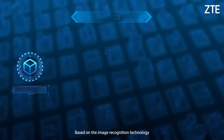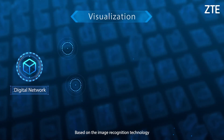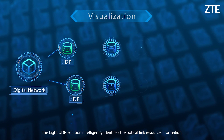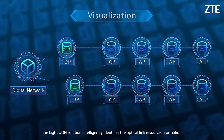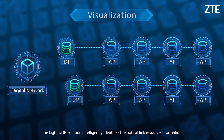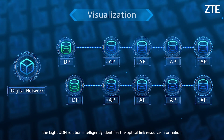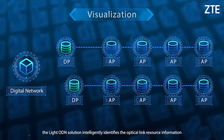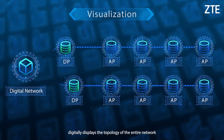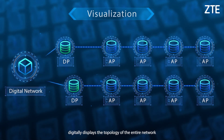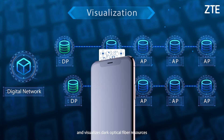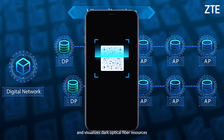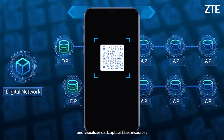Based on image recognition technology, the Light ODN solution intelligently identifies optical link resource information, digitally restores the topology of the entire network, and visualizes dark optical fiber resources.